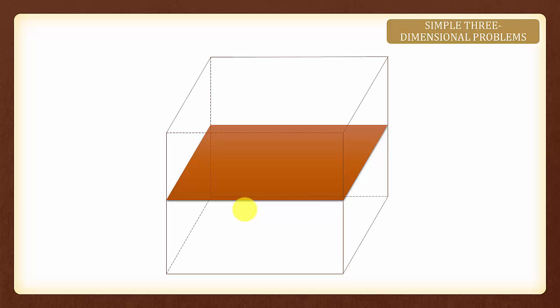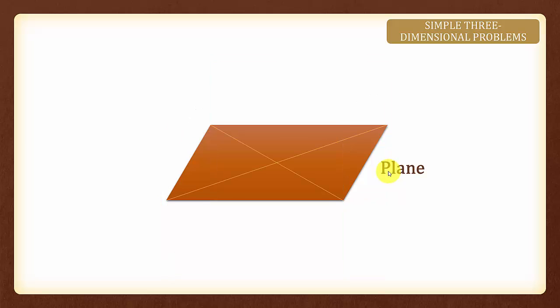Now what do you think this orange object looks like now? Yes it is a plane. A plane is simply a three-dimensional surface.